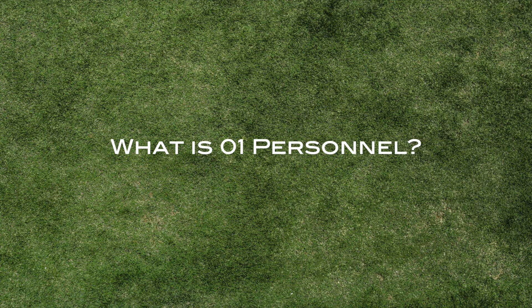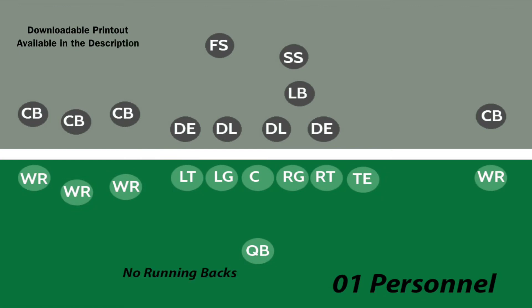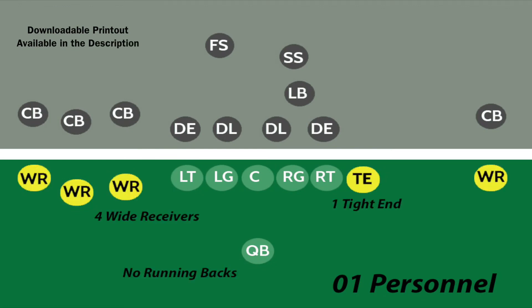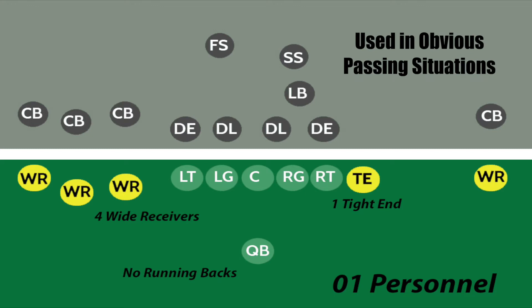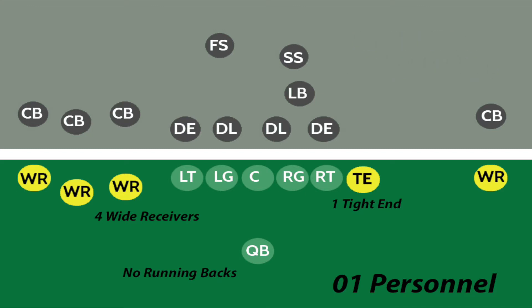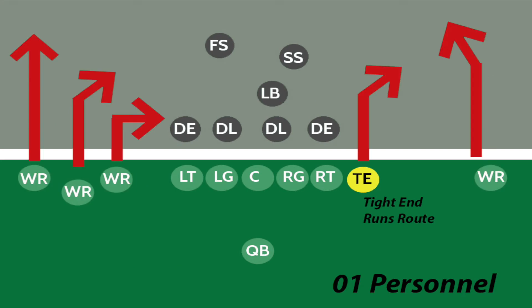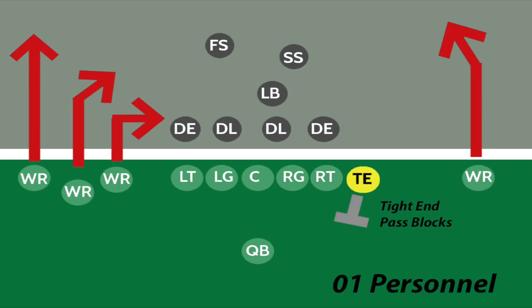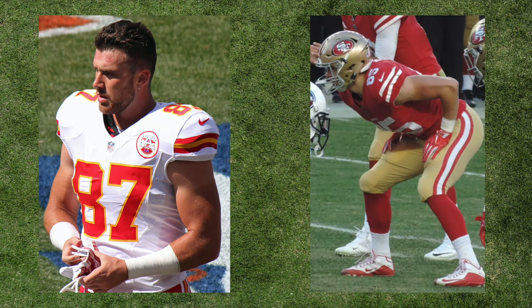What is zero-one, or one personnel? One personnel means that on offense there are no running backs, one tight end, and four wide receivers on the field. This is an empty package used primarily in obvious passing situations. It gives the offense the option to have a tight end on the field to either run a route and catch a pass, or stay in to block for the quarterback. This package may be used when a team has an elite pass-catching tight end such as Travis Kelce or George Kittle.